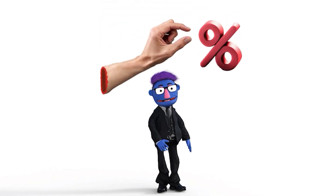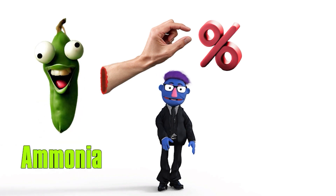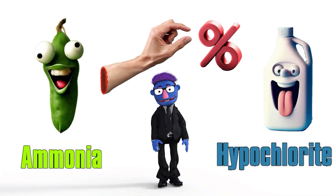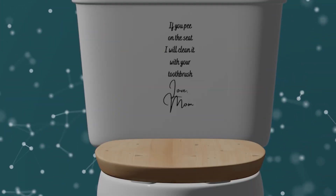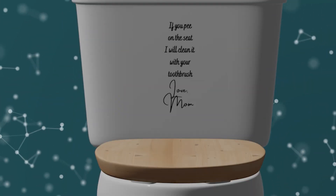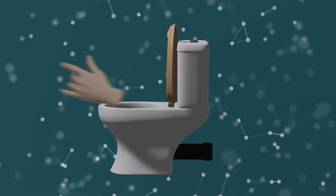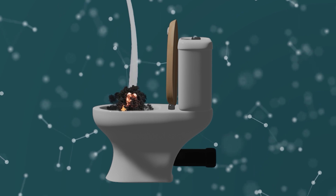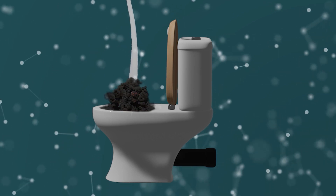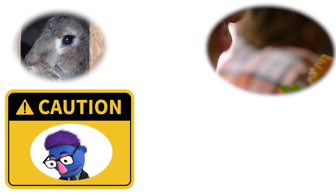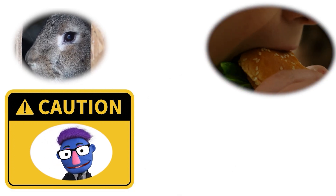Luckily, pee contains a small percentage of ammonia, and normal domestic bleach contains a smaller percentage of hypochlorite. It's still strong enough to cause the same reaction, but it's safe to say that you won't be losing any fingers or launching any rockets while urinating into the bowl. Don't sniff, consume, drink, or otherwise do anything with the contents.